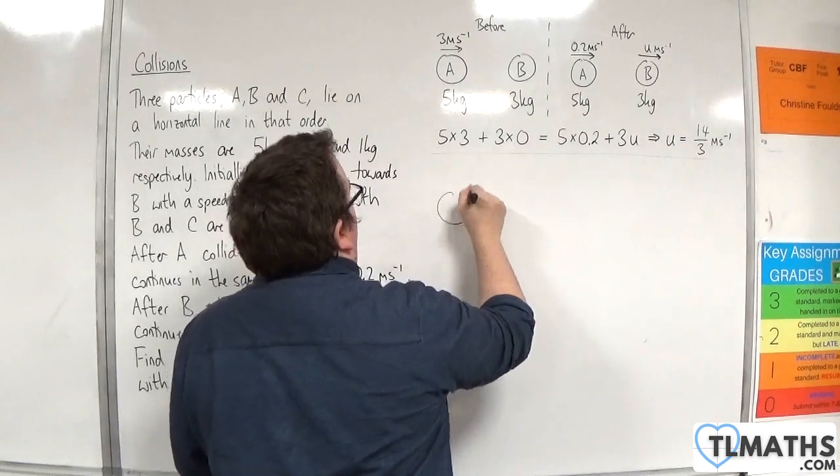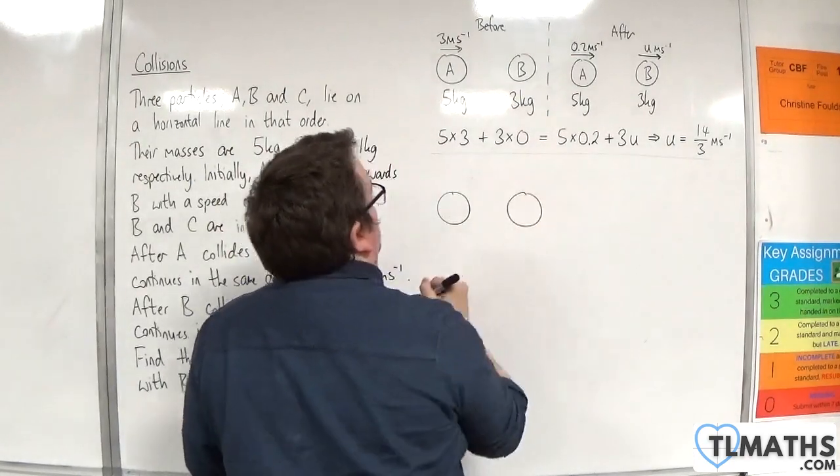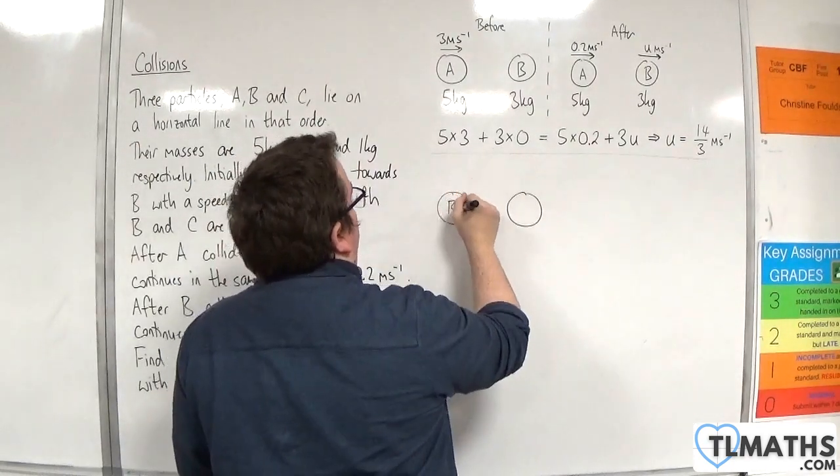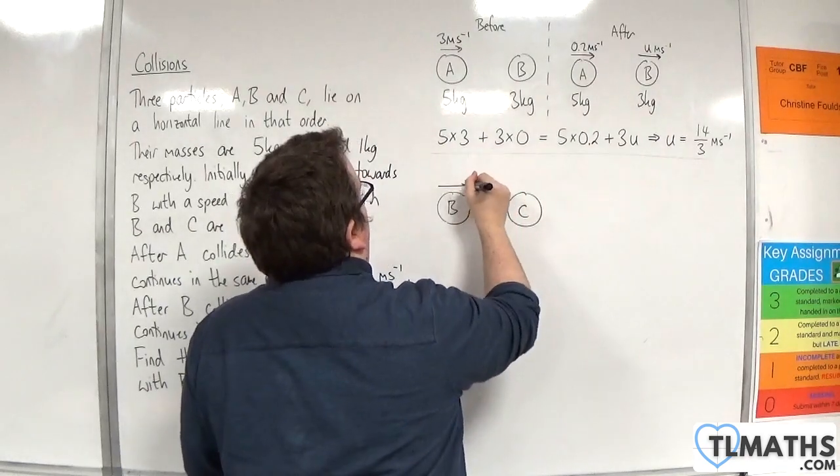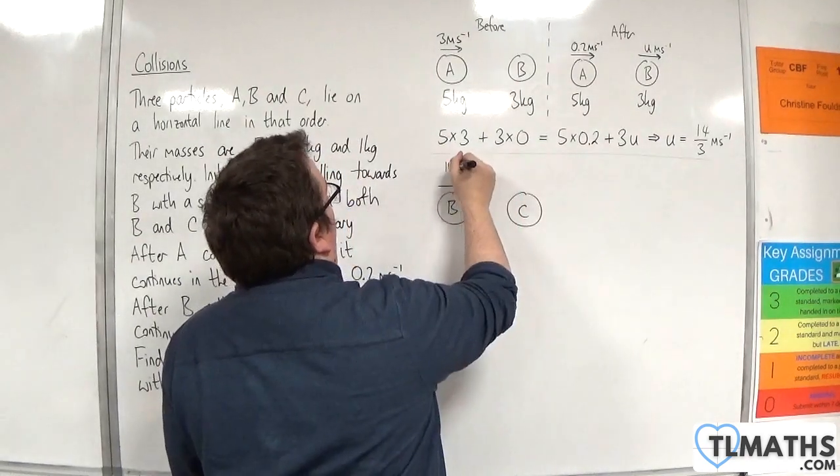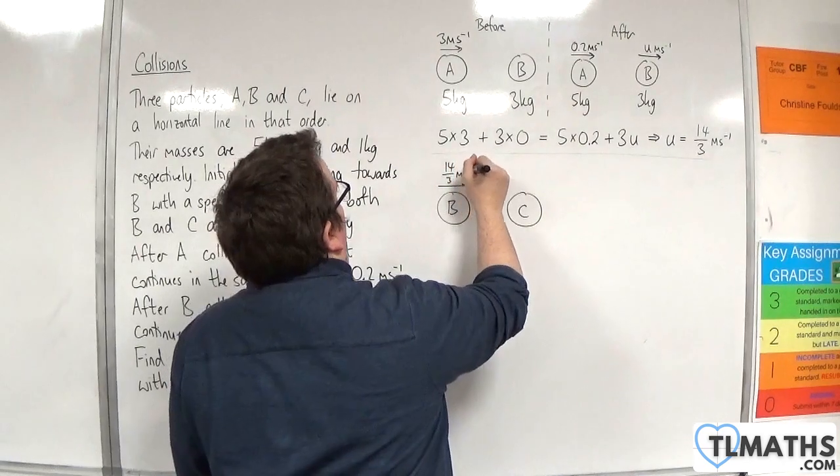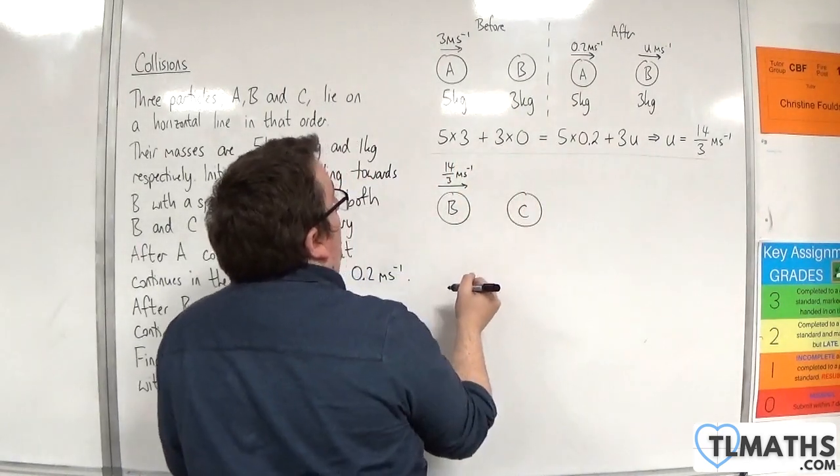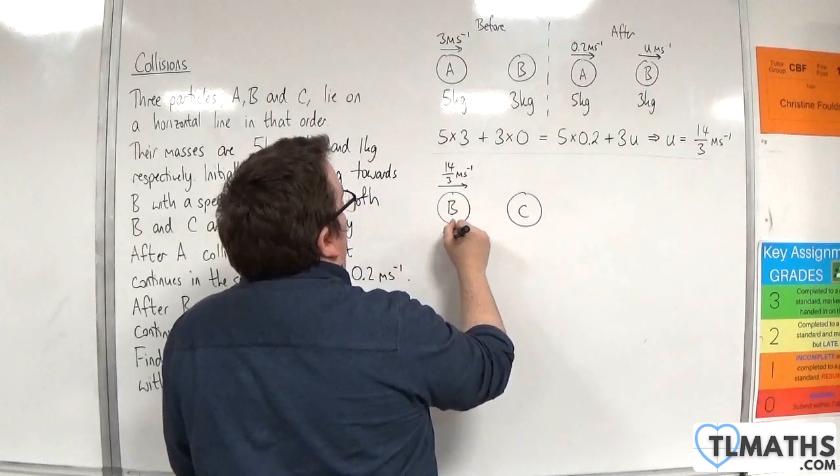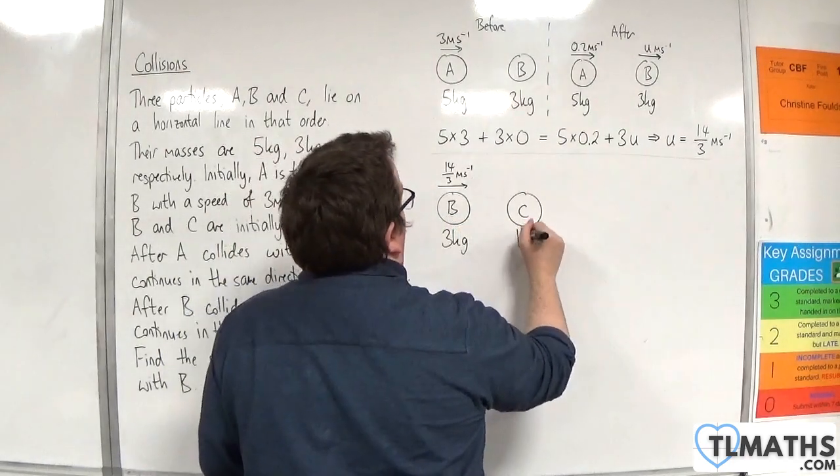Particle B is traveling towards particle C. So particle B is traveling to the right at 14 thirds meters per second. Particle C is stationary. Now this is 3 kilos and this is 1 kilo.